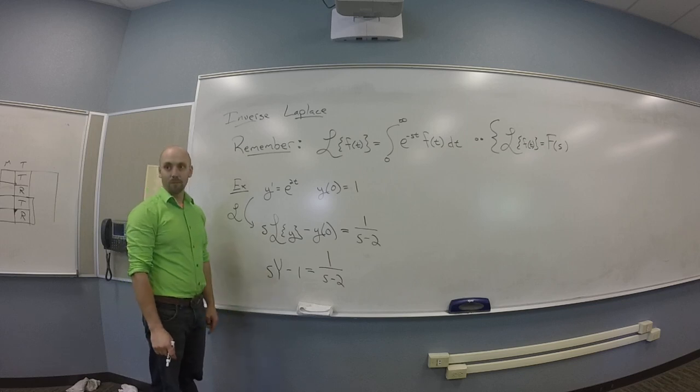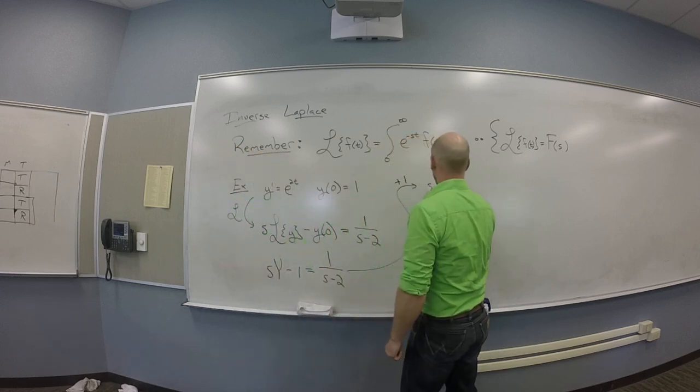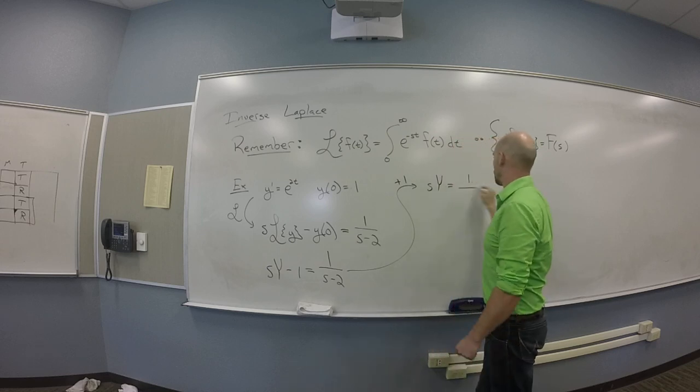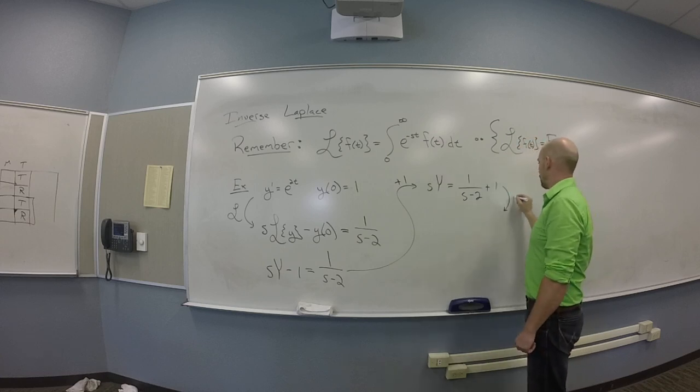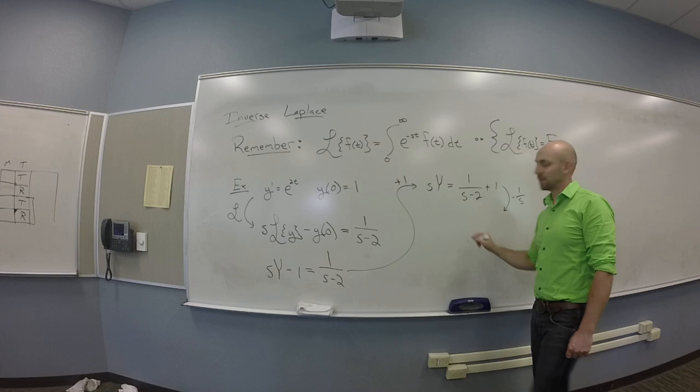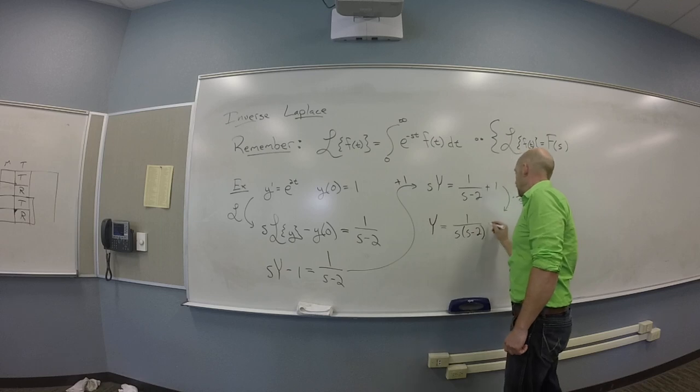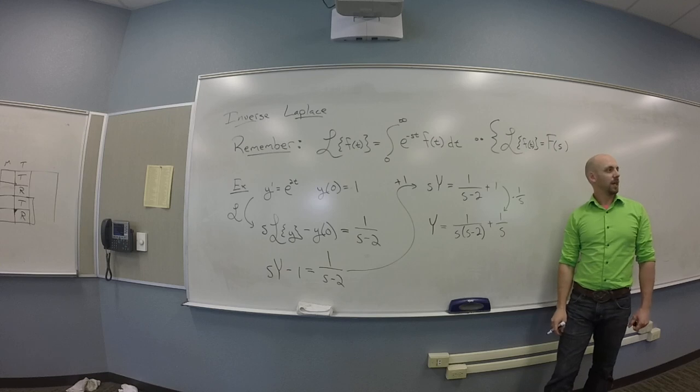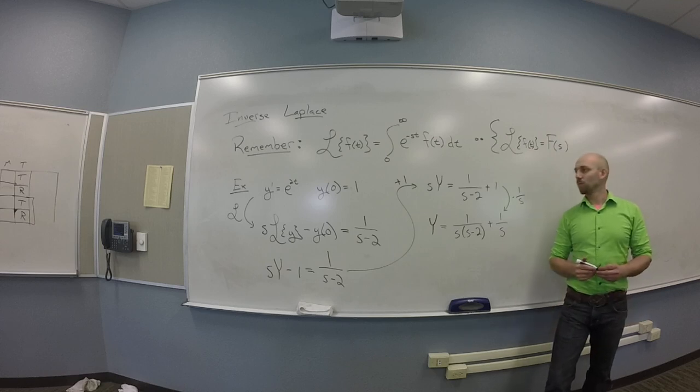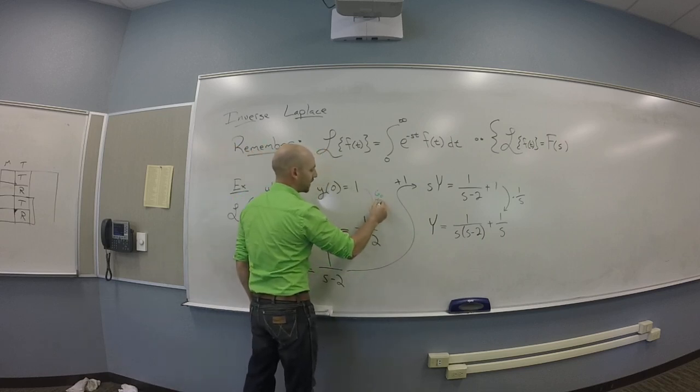So I'm going to settle for finding out what capital Y is. I'm going to add 1 to the other side, I'll get s times capital Y is 1 over s minus 2 plus 1. Then I'll pull a classic and divide by s. So I'll get Y is 1 over s times s minus 2 plus 1 over s.